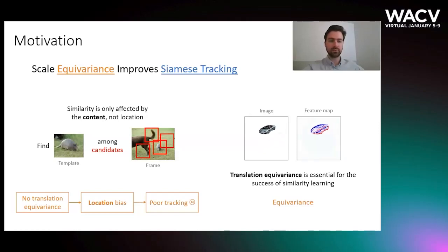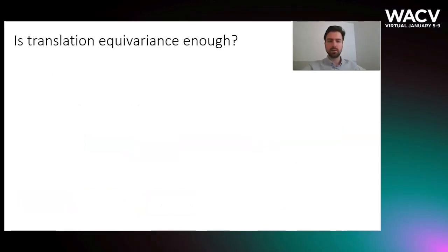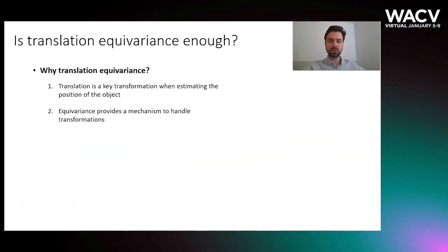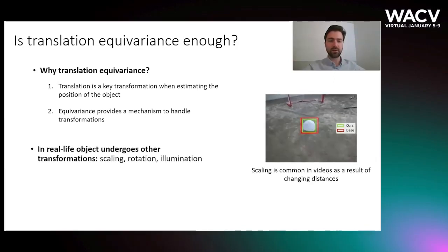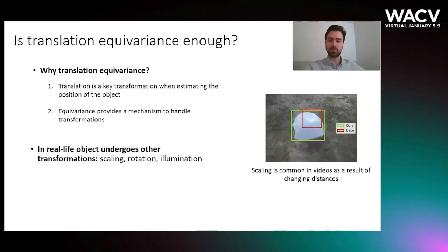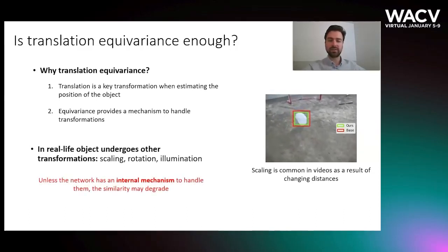Broken translation equivariance results in location bias, which makes accurate tracking challenging. So, why do we focus on translation equivariance exclusively? Translation is a key transformation when estimating the position of the object, and equivariance provides a natural mechanism to handle transformations. In realistic scenarios, however, objects undergo other transformations, like scaling, rotation, or illumination change. Unless the network has an internal mechanism to handle them, the similarity may decrease.